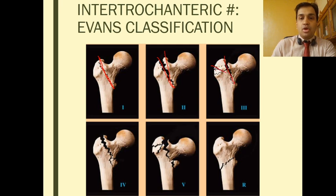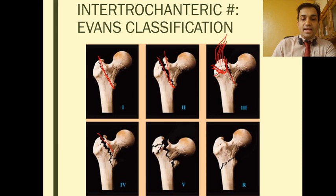Evans Type 3 is a Type 1 or Type 2 with comminution at the greater trochanter. This is important because it may cause avulsion fracture of the greater trochanter, to which gluteus medius and other hip abductors are attached.